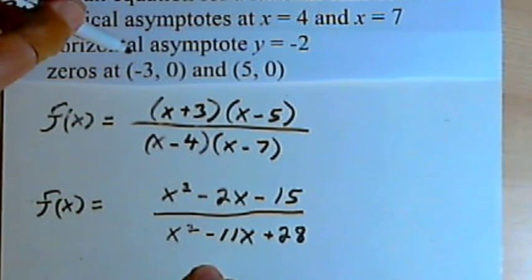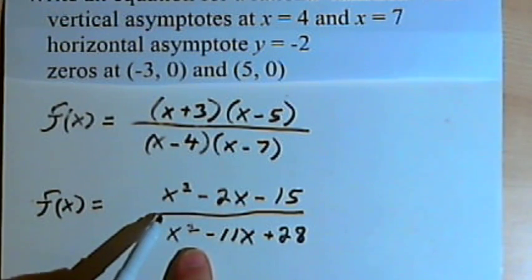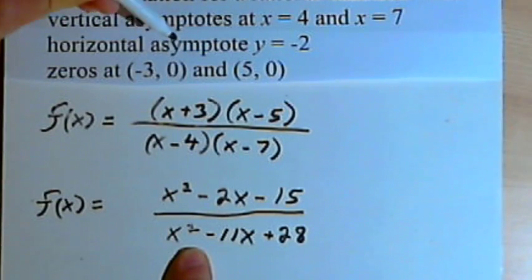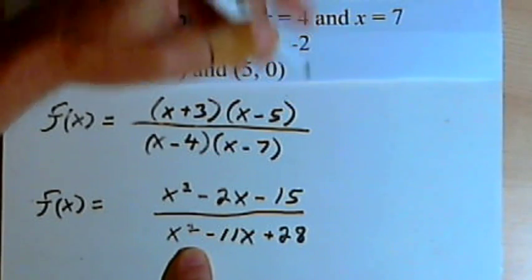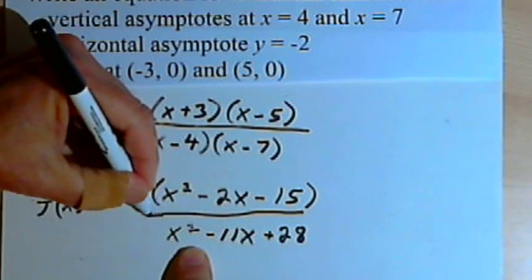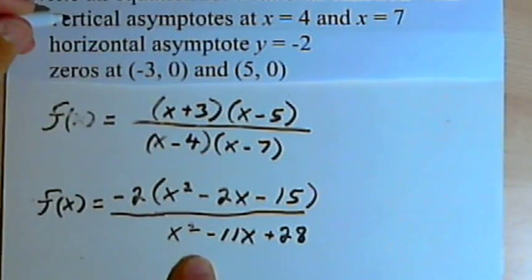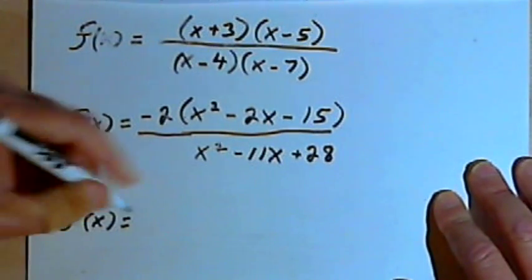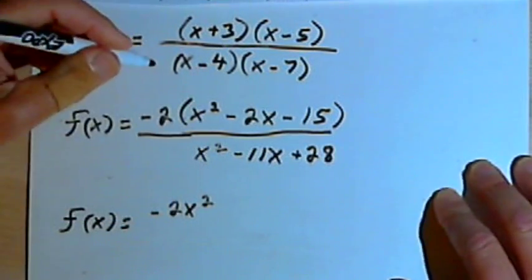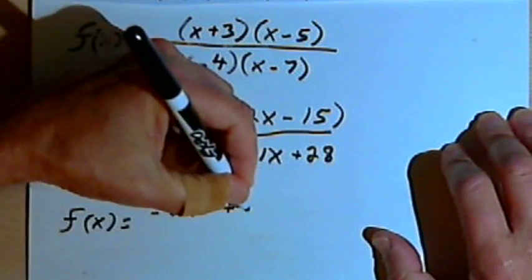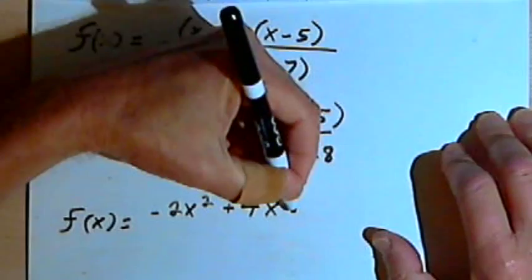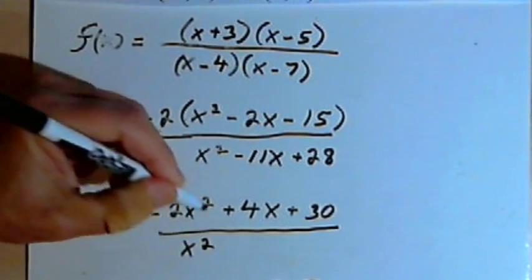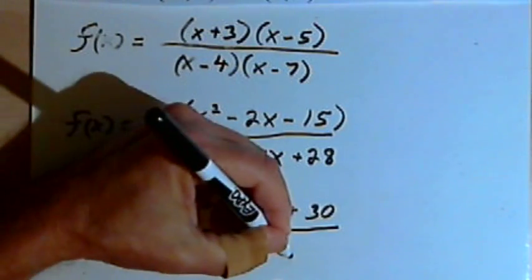Let's check the horizontal asymptote. What I've got here will have a horizontal asymptote at y equals 1, since they're both second-degree polynomials with the same lead coefficient. But I want y equals negative 2 as my horizontal asymptote. So I'm going to take the entire numerator polynomial and multiply it by negative 2. That gives f of x equals negative 2x squared plus 4x plus 30, over x squared minus 11x plus 28.